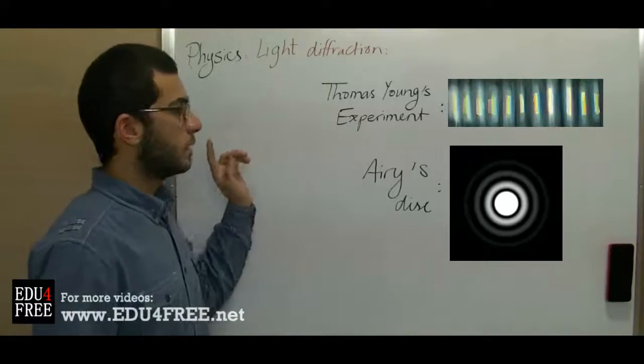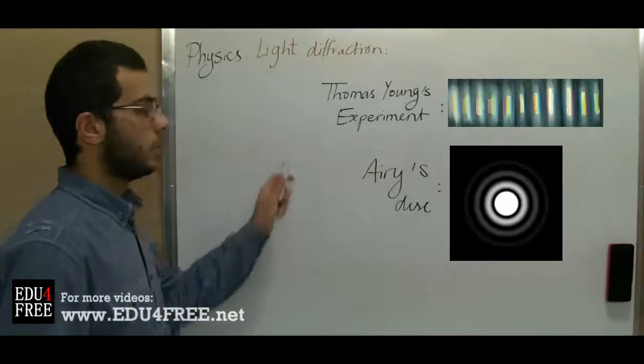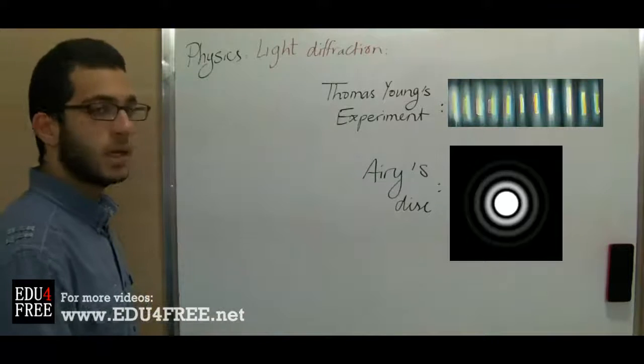We get a bright central fringe due to constructive interference. Then on both sides of this fringe we get dark, then bright,